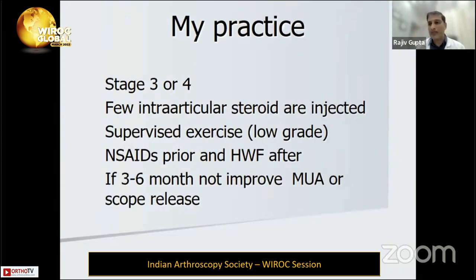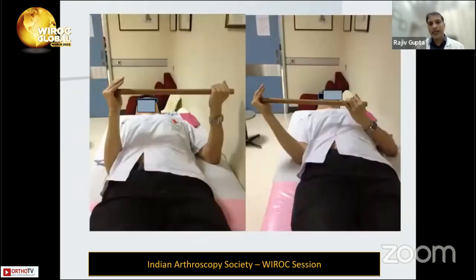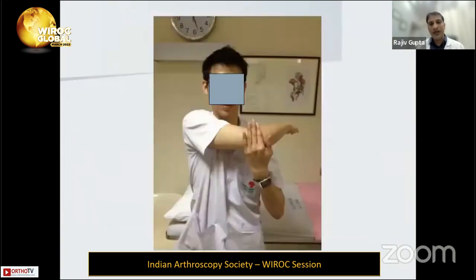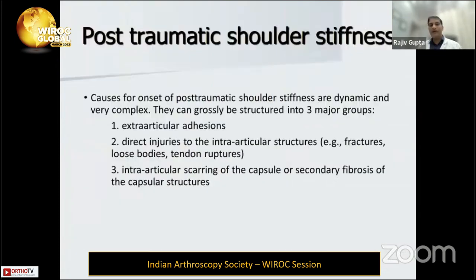In my practice for stage three and four, I first give intra-articular steroid injection and advise supervised physiotherapy. If it doesn't improve, I do arthroscopic release, after which we start aggressive physiotherapy. Frequency and repetitions are very important — capsular stretching in anterior, posterior, and abduction planes — to achieve proper range of motion.